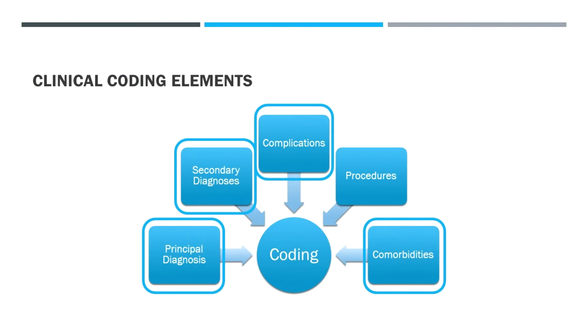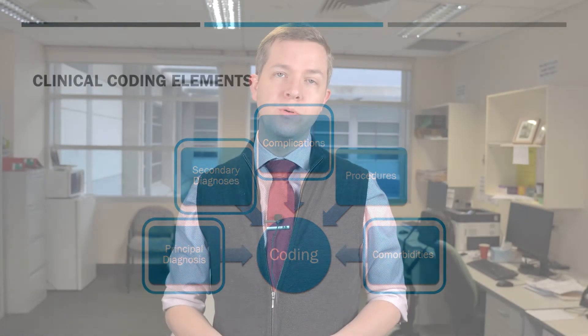In this session we'll be continuing our series on coding matters, with a particular focus on respiratory issues that require coding. A lot of this is really surrounding supporting the principal diagnosis, so we'll be revisiting the principal diagnosis — particularly of pneumonia and COPD exacerbations — and then linking that with secondary diagnoses, complications, and comorbidities that accurately reflect the complexity of many of these admissions.